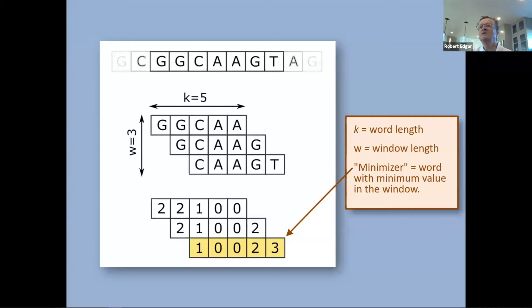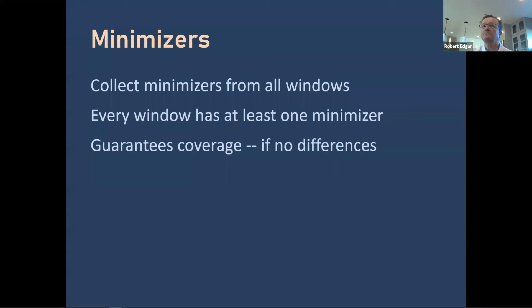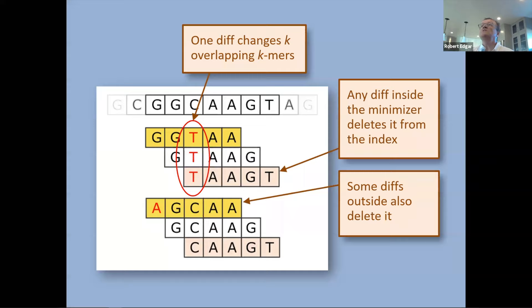The way minimizers work: you take a window of some length — in this toy example, a window of three k-mers of length five. You look at the integer value of each k-mer and ask what's the smallest integer value in that window — that's the k-mer you pick. You select maybe one third of all k-mers this way. This guarantees a certain minimum coverage because every window has at least one minimizer, so you've selected a subset with guarantees. However, k-mers are quite vulnerable to differences: a substitution — biological or from sequencing error — doesn't just knock out one k-mer, it knocks out every k-mer that overlaps the mutated position. With a minimizer, it can also change which minimizer is chosen in a window, so even if the k-mer itself isn't changed, it may be lost because some other k-mer in the window now has the smallest integer value.